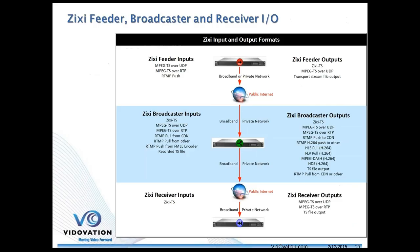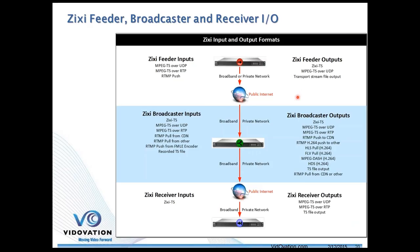In a typical workflow, the encoder feeds MPEG-TS streams or does an RTMP push to the Zixi feeder appliance — a capability also integrated into certain vendors' encoders. What comes out is the Zixi transport stream, with content-aware FEC and content-aware ARQ built in, providing a robust transmission stream to the broadcaster, which could be in the cloud, at the receiver location, or at an operations center serving as a hop — for example, from LA to New York to London.